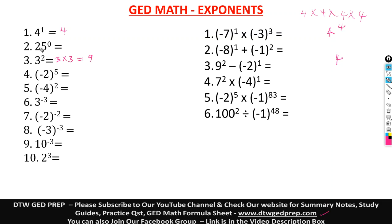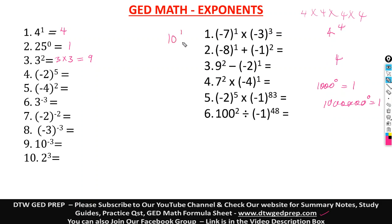Another important rule: any number raised to the power of 0 gives us 1. Be it 1,000 raised to power 0 — the answer is 1. It's a mathematical standard. Even 10,000,000 raised to power 0 is 1. And any number raised to the power of 1 is that number. So 10 raised to power 1 is 10.